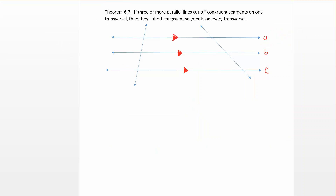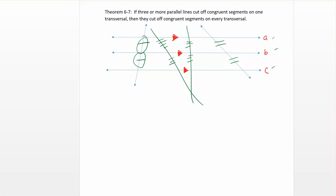The last theorem is 6-7, which deals with parallel lines rather than parallelograms specifically. It says: if three or more parallel lines cut off congruent segments on one transversal, they cut off congruent segments on every transversal. So if one transversal is divided into equal parts by three parallel lines A, B, and C, then any other transversal — a third, a fourth — is also cut into congruent parts.